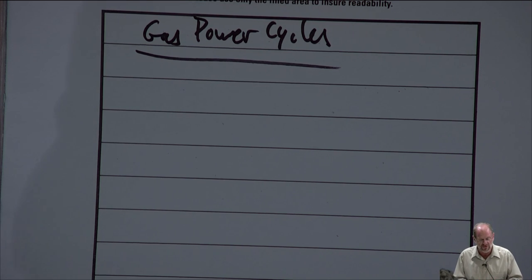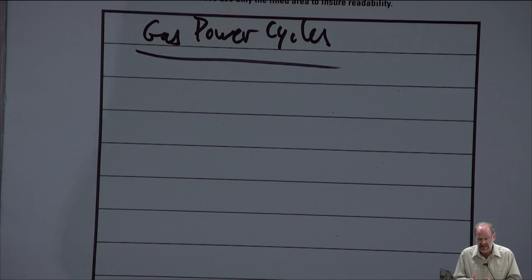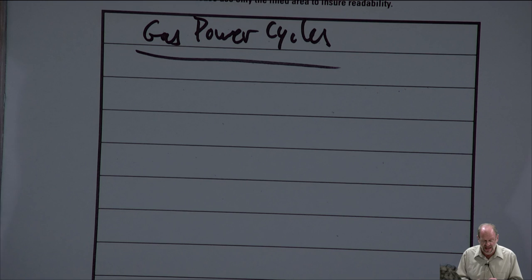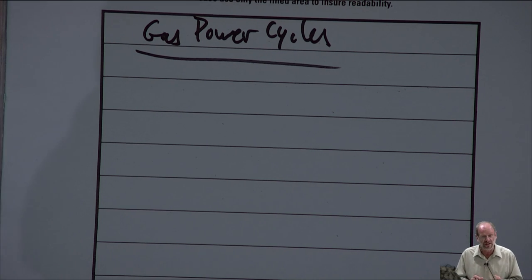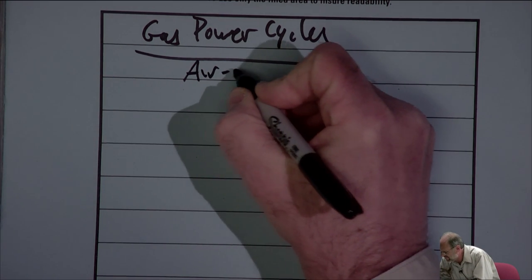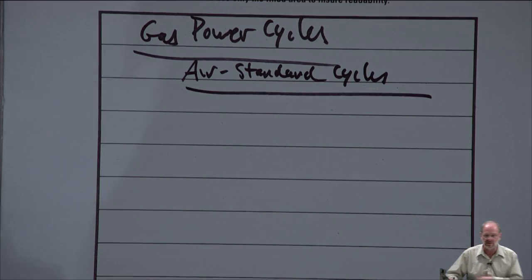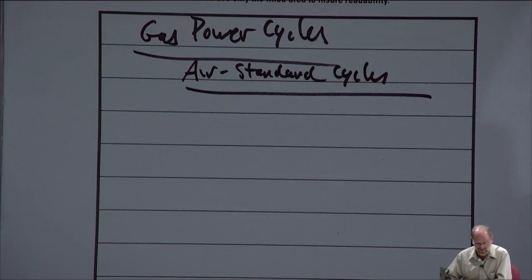The problem with real cycles is they require understanding thermodynamic properties for mixtures, which we're not yet at. Air-fuel mixtures can't be analyzed as pure substances. Combustion gases are mixtures primarily of water vapor and carbon dioxide. So when we deal with gas power cycles, we should understand that we really do have air-fuel or combustion gas mixtures moving throughout, but we're going to make a big simplification and talk specifically about what we call air standard cycles.